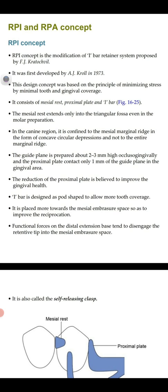The RPI concept is the modification of the I-bar retainer system, which we already discussed in the ninth video. It was proposed by FJ Crouchville and first developed by AJ Kroll in 1973. This design concept was based on the principle of minimizing stress by minimal tooth and gingival coverage.